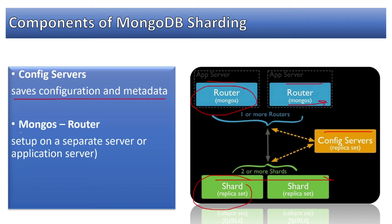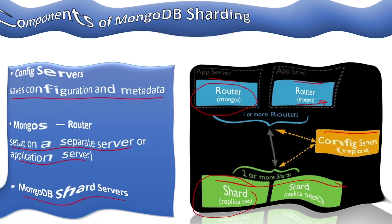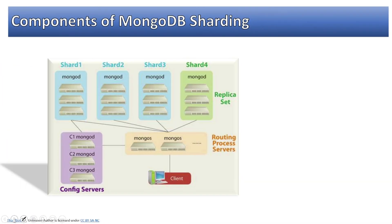The mongos router is set up on a separate server or application server. It is recommended to set it up on the application server where your application code is running. The MongoDB shard server is the actual MongoDB shard instance. This is another view of the components.